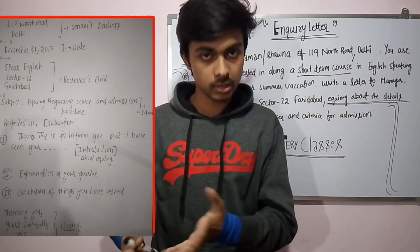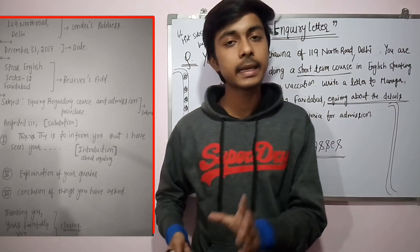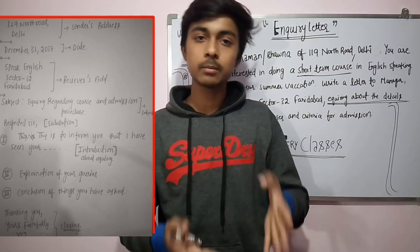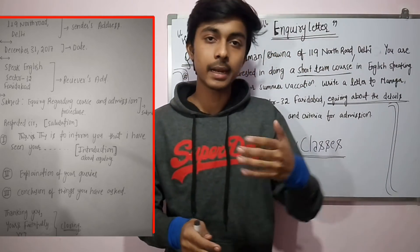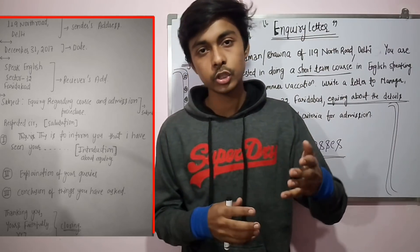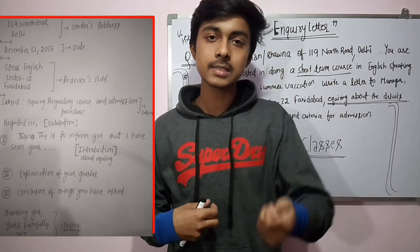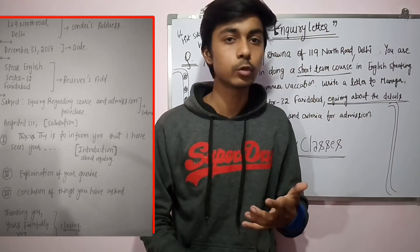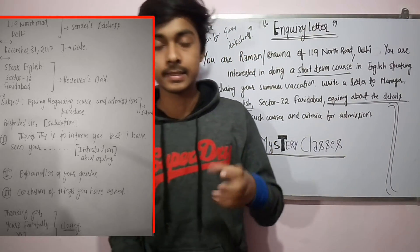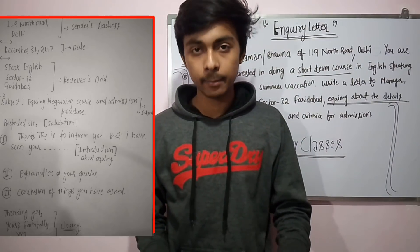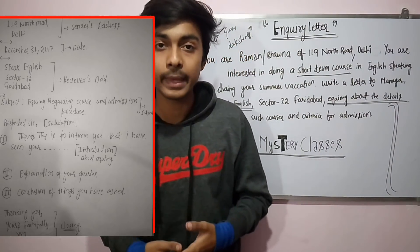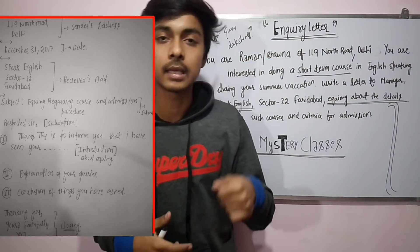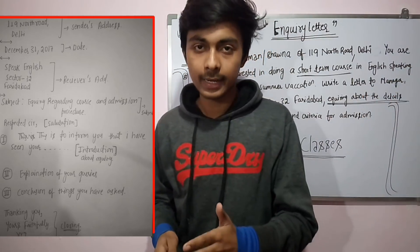For an inquiry letter, in the subject line we write something like 'Inquiry about a particular course' — for computers, English, or whatever subject is given. Then in the first paragraph, we write about the course and where we saw the institute's advertisement or how we approached them. In the second paragraph, we detail what we want to learn and what the institute offers. In the third paragraph, we list all our queries, one per line.